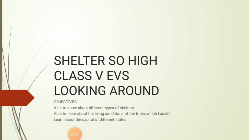Children, today we will learn about shelter. This is Class 5 EVS, Looking Around. The objectives are: we will be able to learn about different types of shelters, able to learn about the living conditions of the tribes of Leh, Ladakh, and learn about the capitals of different states.